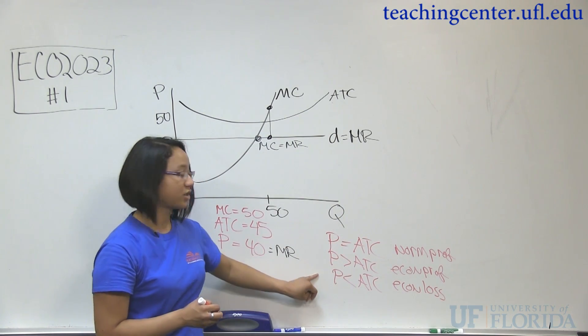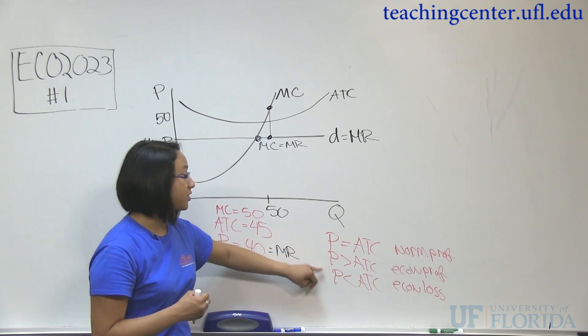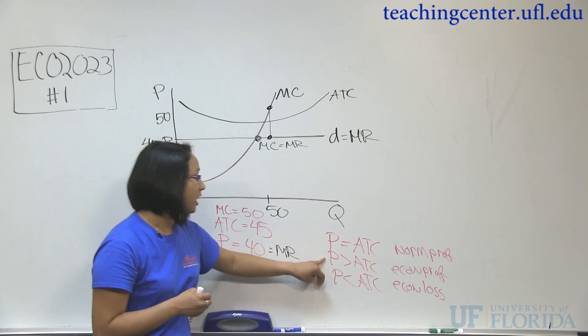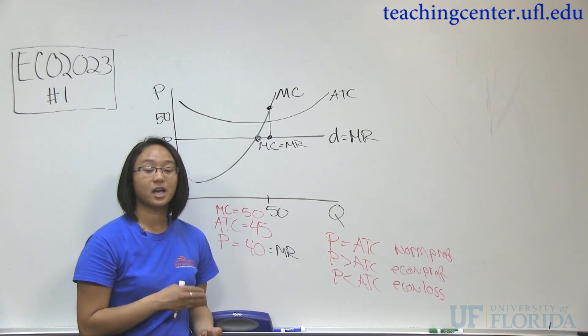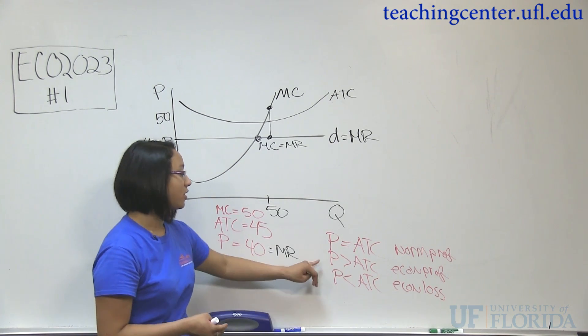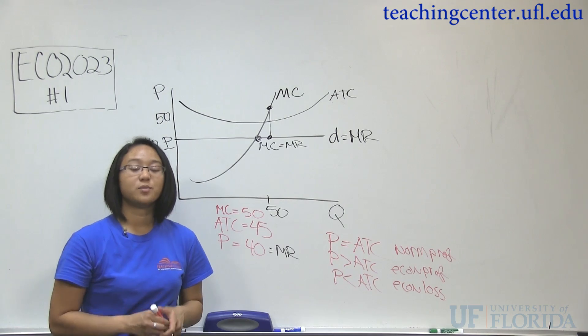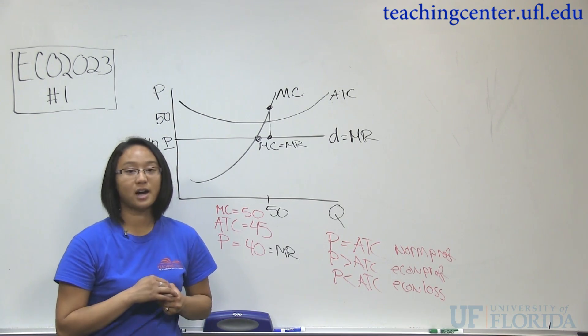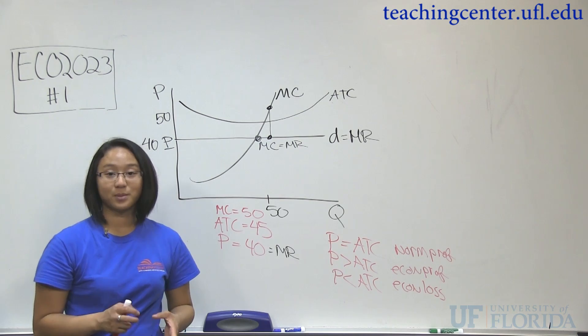So here, if ATC is greater than your price, you're incurring more costs than you're earning. So that is an economic loss. If price is greater than ATC, then you're earning more than you're expensing with your costs. So that's an economic profit. If price is equal to your ATC, then you're making just enough to cover your costs. And that's a normal profit. Also, a zero economic profit.